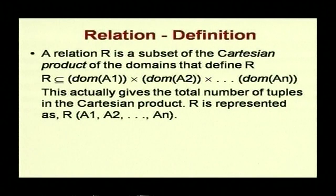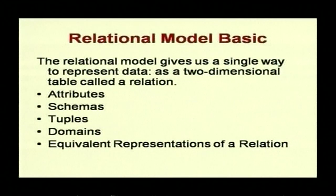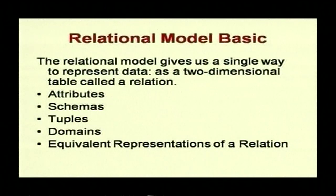If you have attributes A1 to An, the domain of A1 times the domain of A2 — the Cartesian product of all domains — gives the space from which the relation is drawn. The relational model gives us a single way to represent data: a two-dimensional table called a relation. This relation consists of attributes, schemas, tuples, domains, and equivalent representations.